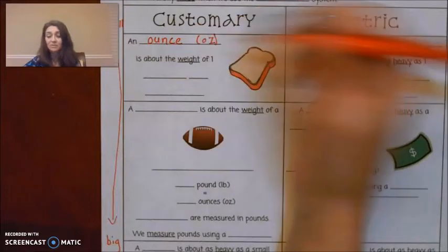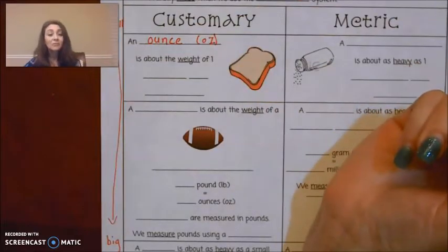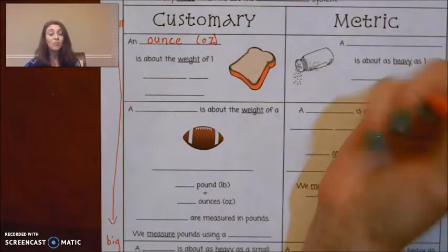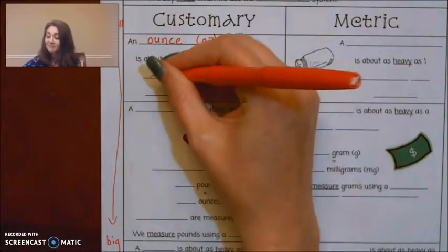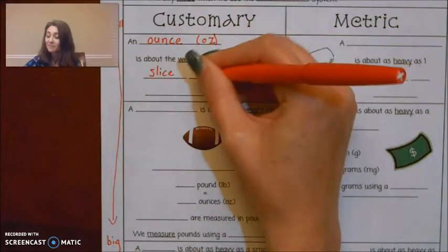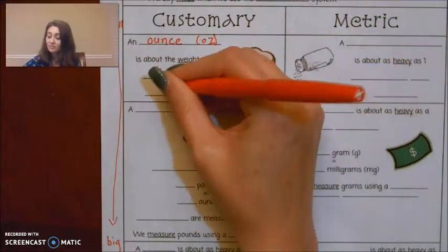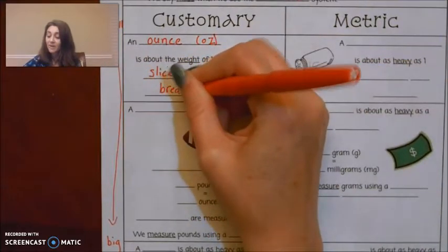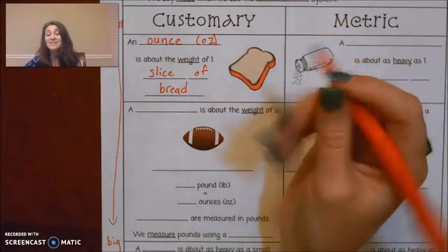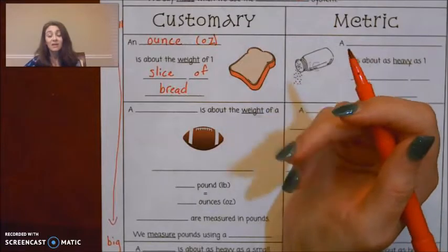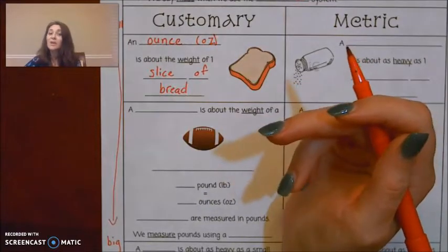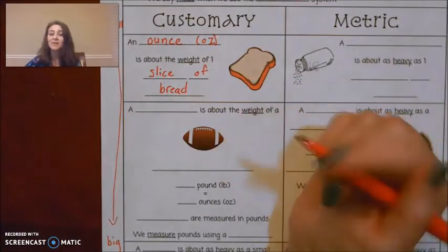An ounce is about the weight of one slice of bread. If you have a loaf of bread, and you go count, and it tells you how many slices or how many servings are in your loaf. If you look at how many ounces are in it, it'll usually be the same.